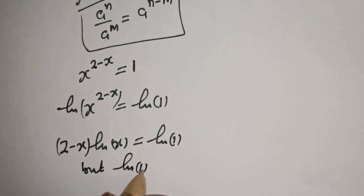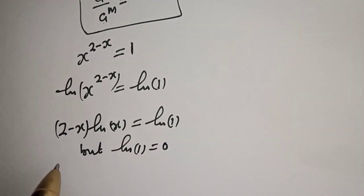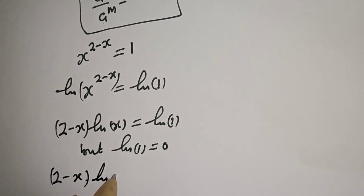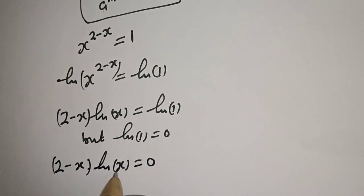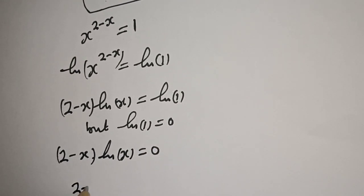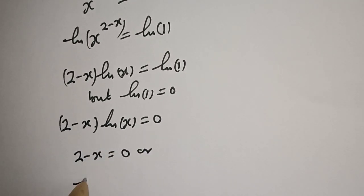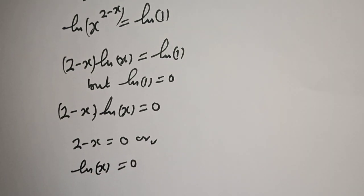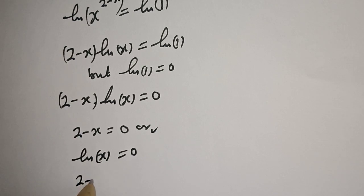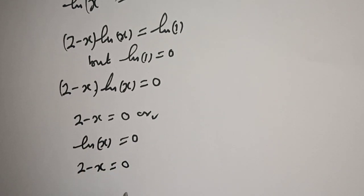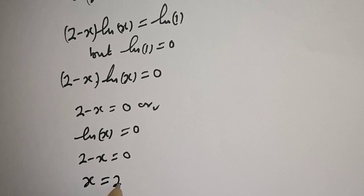Since the natural log of one equals zero, there are two cases: either 2 minus s equals zero, or the natural log of s equals zero. From the first case, s is equal to two — this is the first value of s.